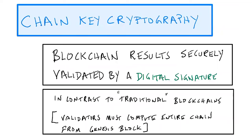This is a big difference from how things traditionally work in the blockchain world. In a traditional blockchain, if you want to validate an individual result, you actually have to compute the entire chain from the Genesis block to get to the block containing the transaction. In contrast, on the Internet Computer, you can validate the result of a transaction simply by taking that result and the corresponding digital signature and validating that — you don't need to look at all the other blocks on the blockchain. That makes a huge difference and makes the Internet Computer a much more scalable and practical Web3 solution.